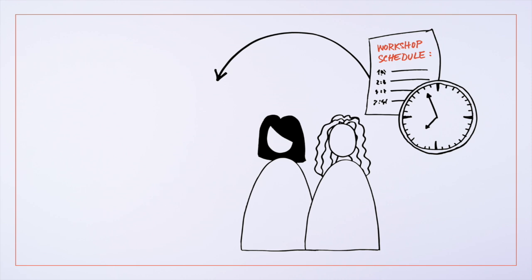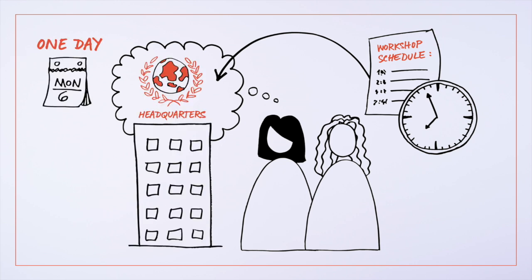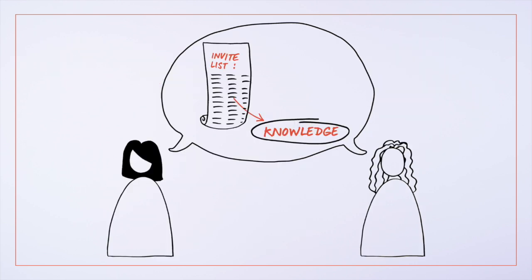Before they decide on the exact schedule and timings, Nata and Zana start by thinking about how long the workshop will be and where it will take place. They then agree who will attend the workshop and the mix of knowledge and skills that they are hoping for.